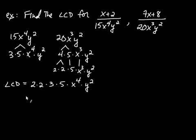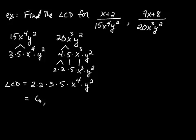Multiplying everything together: 5×2×2×3 = 60, so the LCD is 60x⁴y².